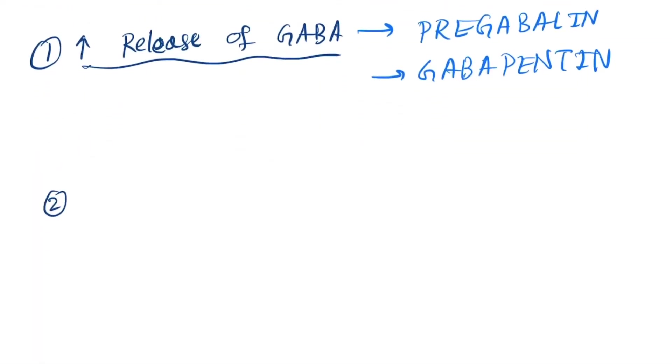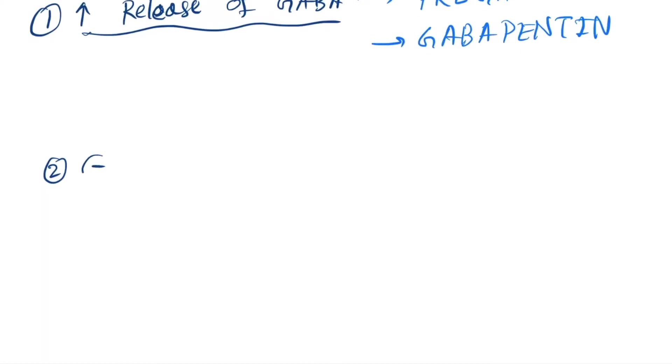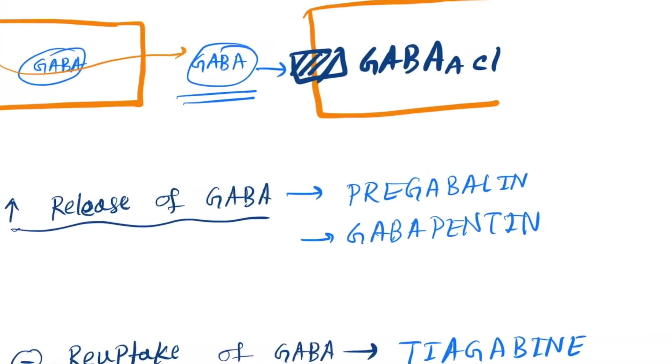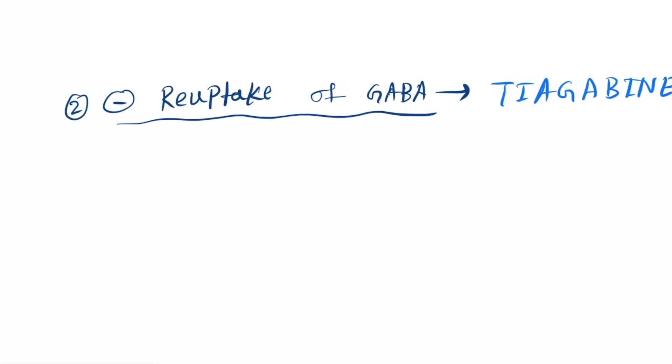Next is the inhibition of reuptake of GABA. So here the drug is tiagabine. So like this route GABA can be uptaken, so we will inhibit this route.